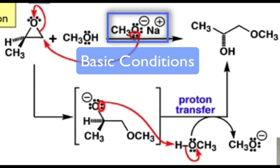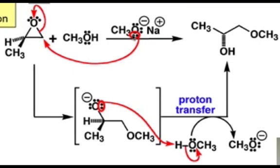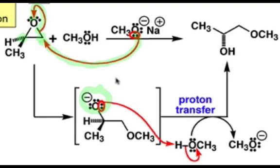Under basic conditions, the nucleophile tends to be the more reactive partner, leading to a conventional SN2-type pathway for additions of nucleophiles to epoxides. When methoxide adds to the epoxide as shown, it adds at the less substituted carbon, because sterically this carbon is more available and open than the more substituted carbon. This leads to cleavage of the C-O bond and formation of an alkoxide. Proton transfer from methanol then regenerates the nucleophile and gives us our product.